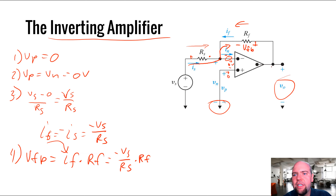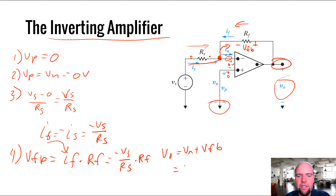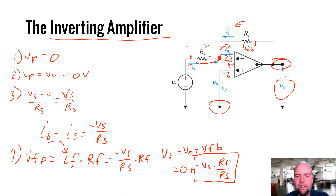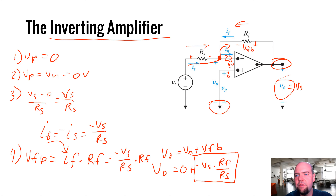The feedback voltage Vfb is If times Rf, which equals negative Vs/Rs times Rf, or negative Vs × Rf/Rs. The output voltage equals the voltage of the negative terminal node plus the feedback voltage: Vout = Vn + Vfb. Since Vn is zero, we get Vout = negative Vs × Rf/Rs. Another way to write this: Vout = Vs × (negative Rf/Rs). This circuit takes the input voltage Vs and multiplies it by this negative ratio defined by the resistances.